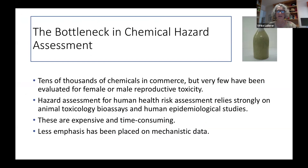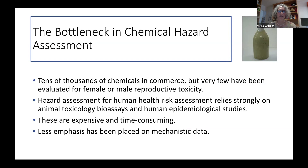Chemical hazard identification represents a bottleneck in the risk assessment process for reproductive toxicants. We know that there are tens of thousands of chemicals in commerce, but very few have been evaluated for female or male reproductive toxicity. Hazard assessment relies most strongly on animal toxicology bioassays and human epidemiological data. Both of these types of studies are expensive and time consuming. Less emphasis has been placed on mechanistic data, and that is what the key characteristics approach was really designed to address.